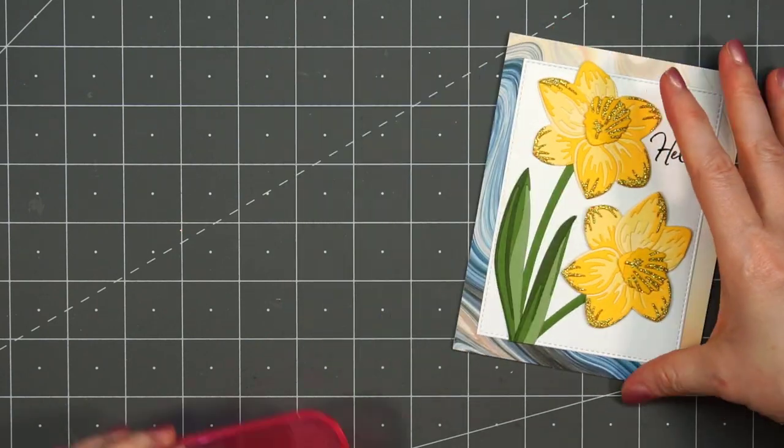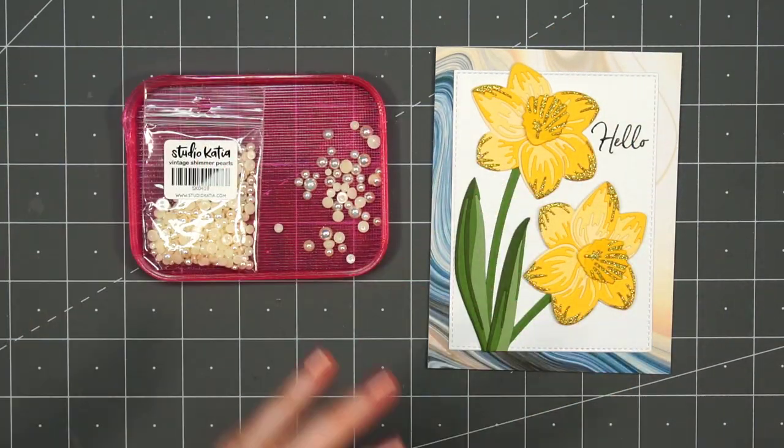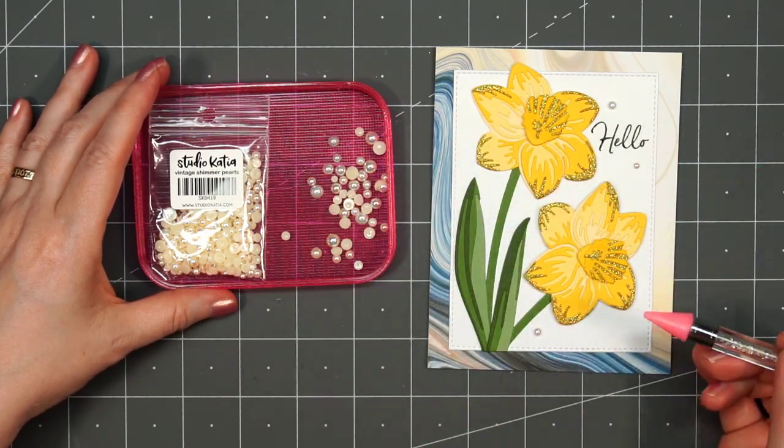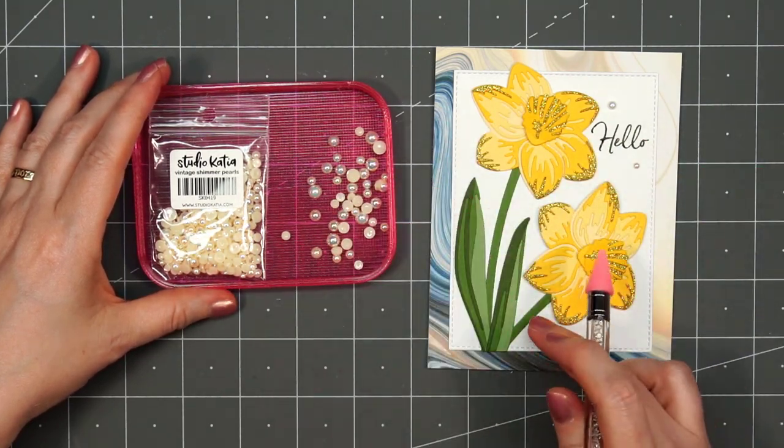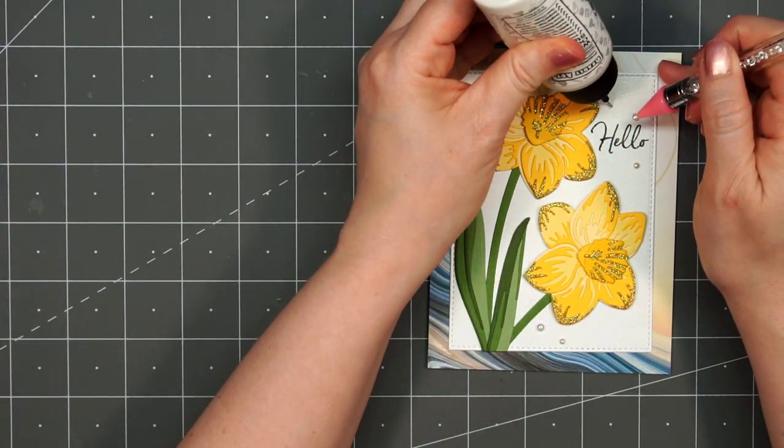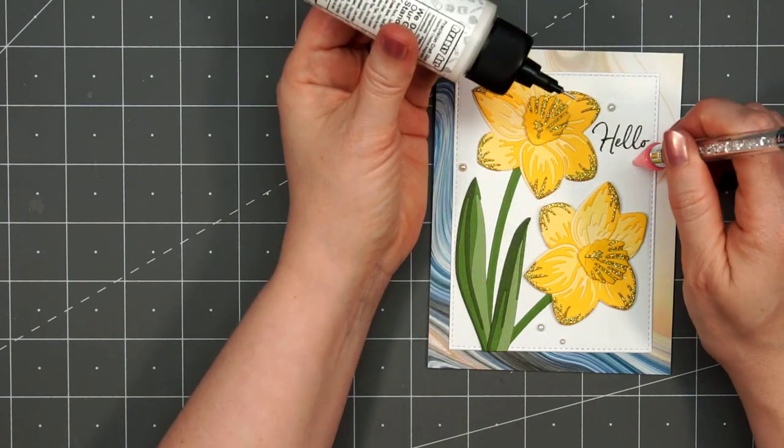I just stamped the word hello to the right of that taller daffodil. Then for a finishing touch, I'm adding a few pearls. These are from Studio Katia. This is their Vintage Shimmer Color. It matches really nicely with that light yellow in the pattern paper.